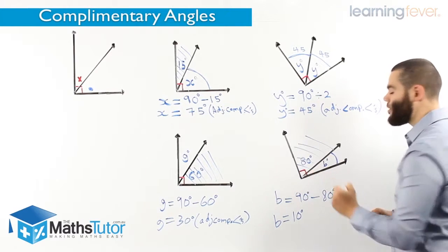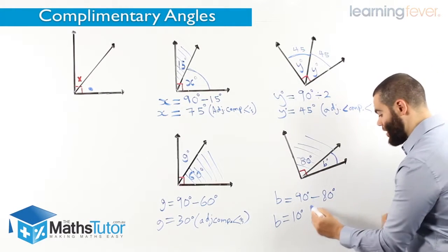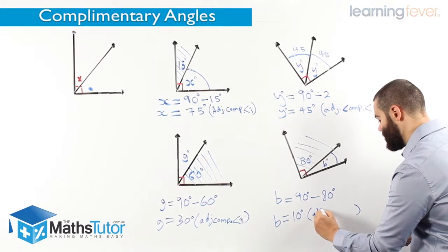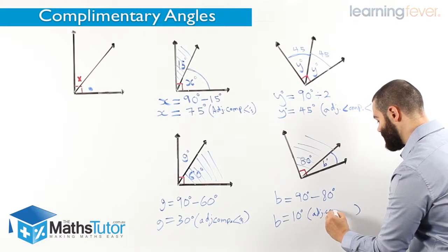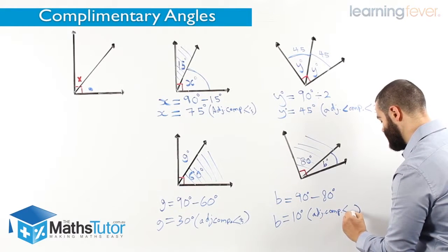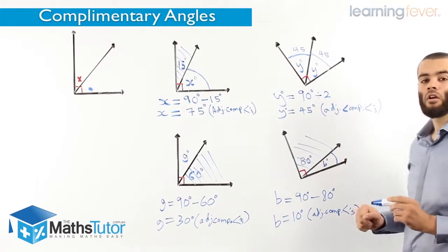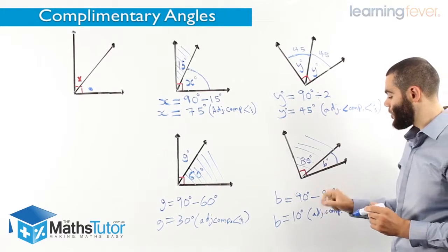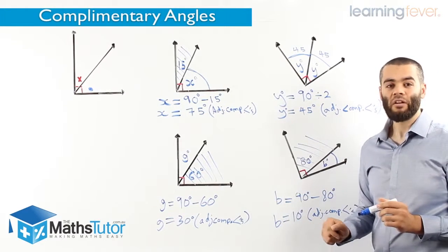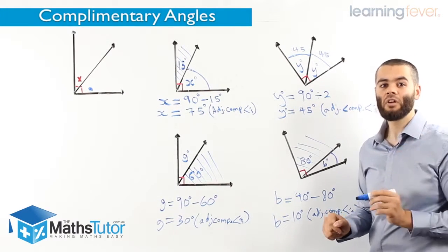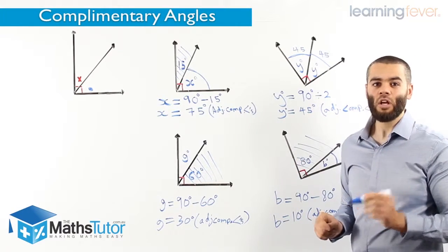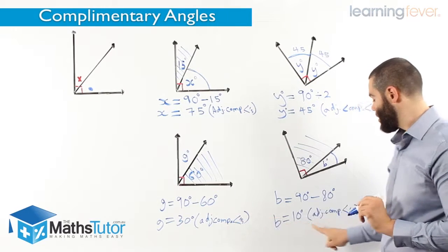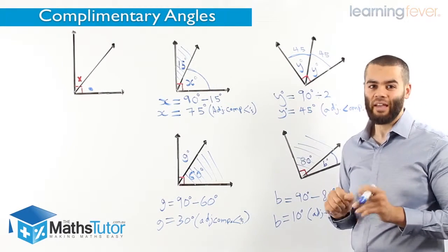And, of course, always, we write our reason: adjacent complementary angles. So it's very important to memorize these reasons. We write them in. We are giving a reason for our answer, because a lot of the times when you're asked to find a missing angle, they're going to say, give reasons for your answer. This is our reason for our answer for our complementary angles.